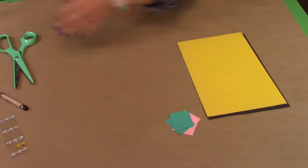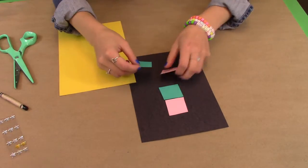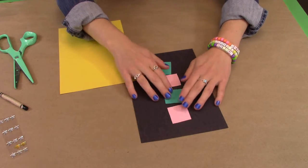Now what you're going to do is line them up on your black piece of paper. I'm going to do a pattern of pink, teal, pink, teal, just like that.